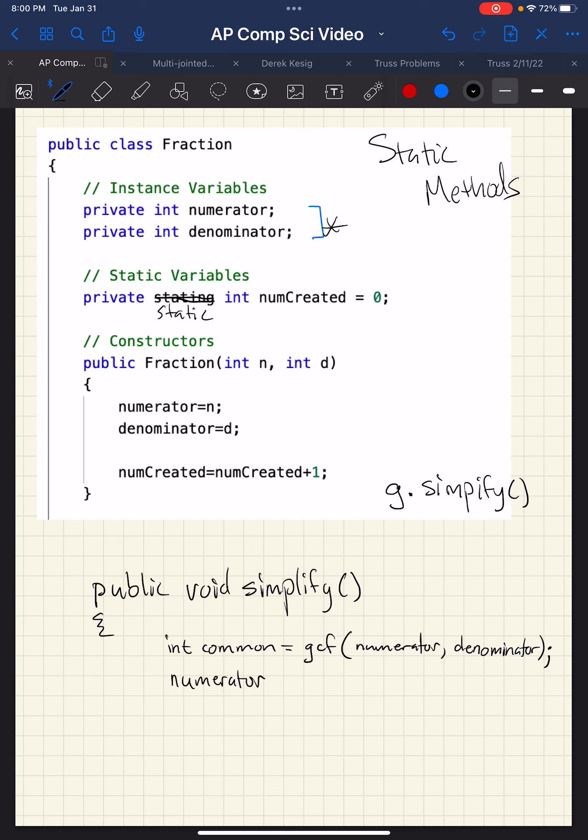You take numerator divide equals common, so you divide the numerator by common. Let's actually write this out. Numerator equals numerator divided by common, and denominator equals denominator divided by common. And this is all you'd have to write if you had a GCF method.